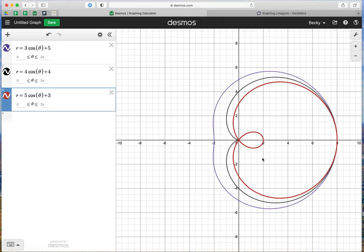I would consider these horizontal graphs, just like the circle graphs that we did that had A cosine theta, which was going to be a circle with the center on the x-axis. So let's change each of these graphs to be sine instead. The prediction that I would make is that these will become vertical.